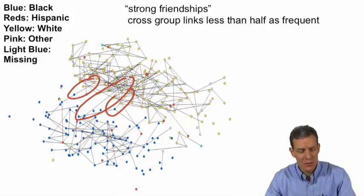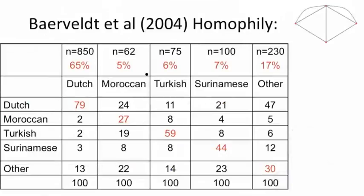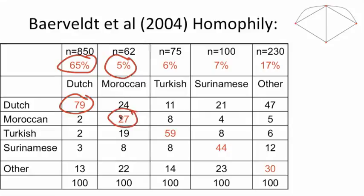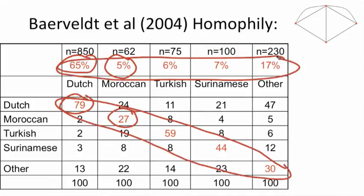This is not unique to American high schools. A study by Baerveldt et al. looking at a Dutch high school shows the same pattern. The Dutch make up 65% of the population, and 79% of their friendships are with other Dutch. Moroccans are 5%, and 27% of their friendships are with other Moroccans. When you look at the diagonal, the values are larger than the population fractions — people have a higher tendency to be linked to their own type than to different types.